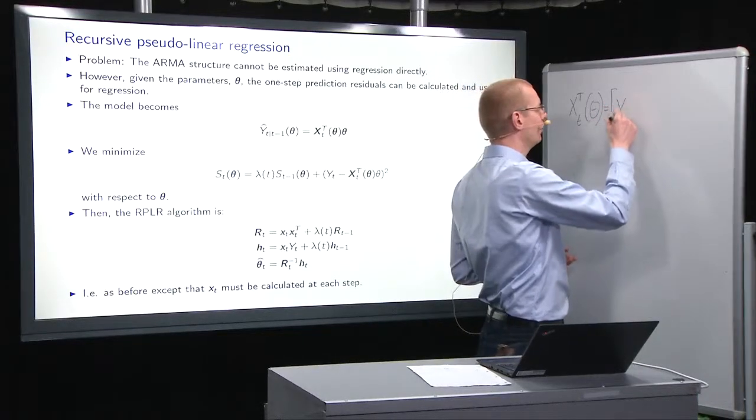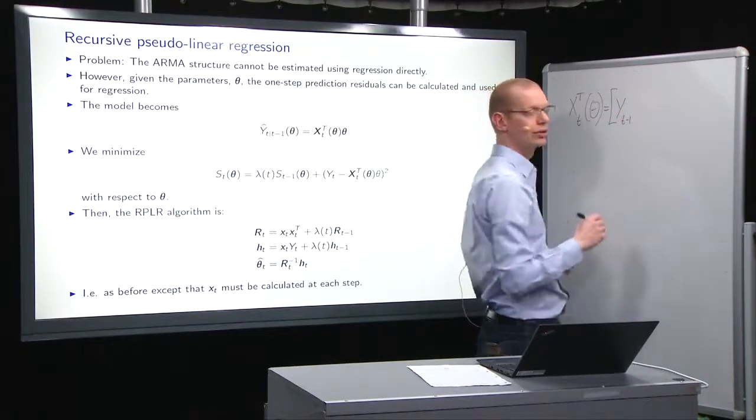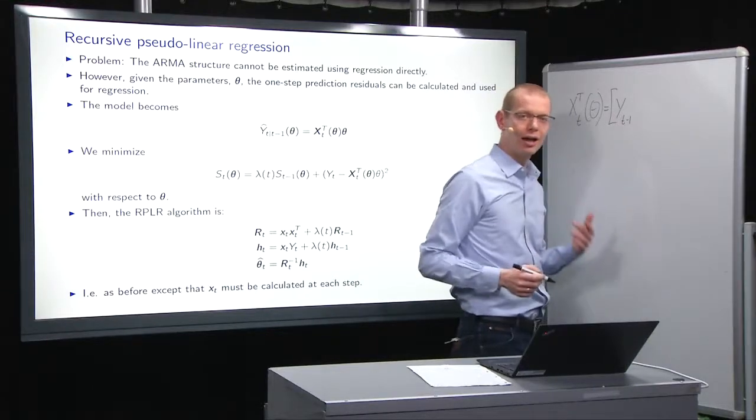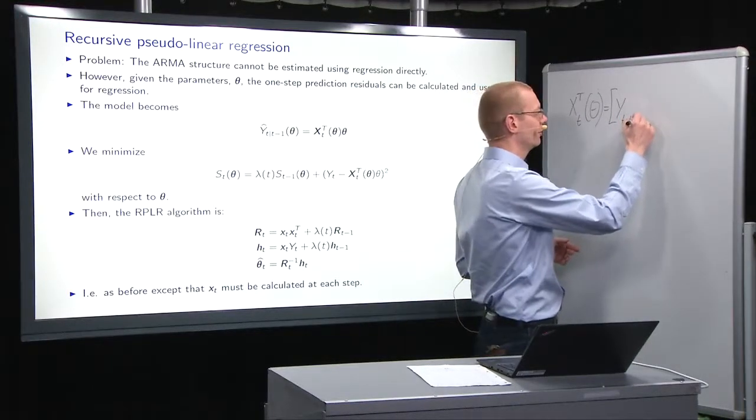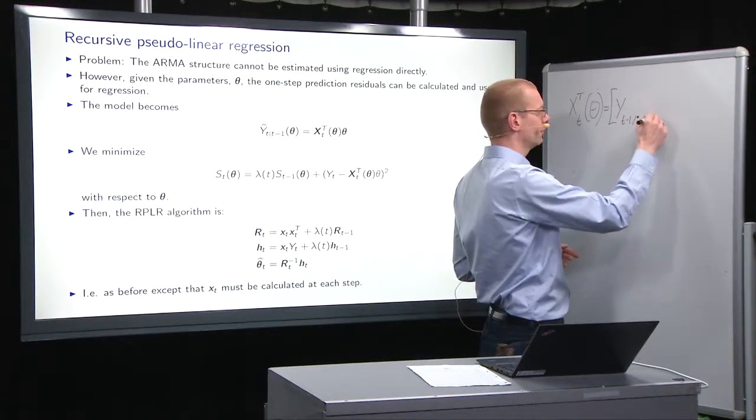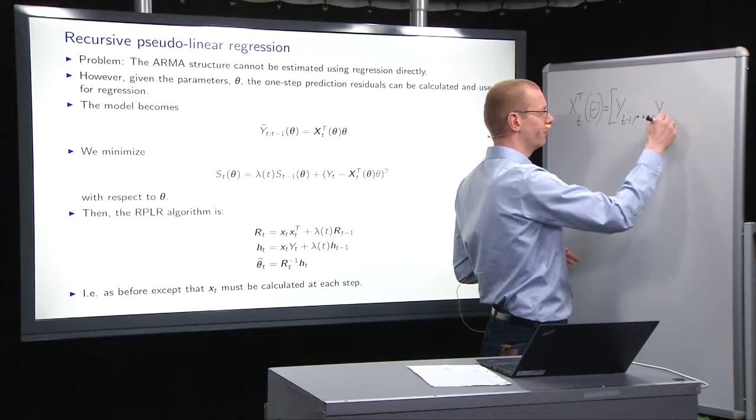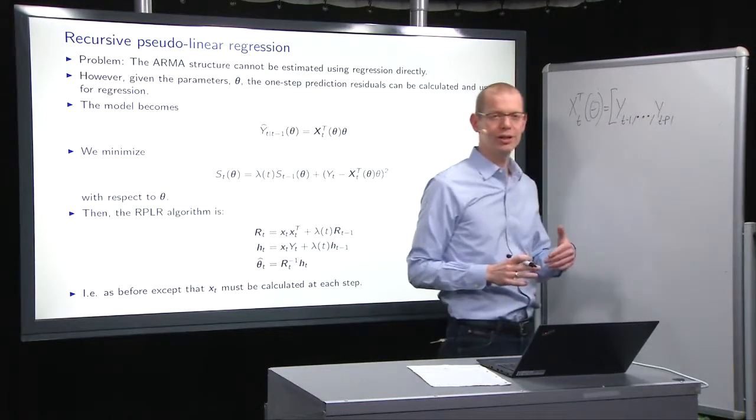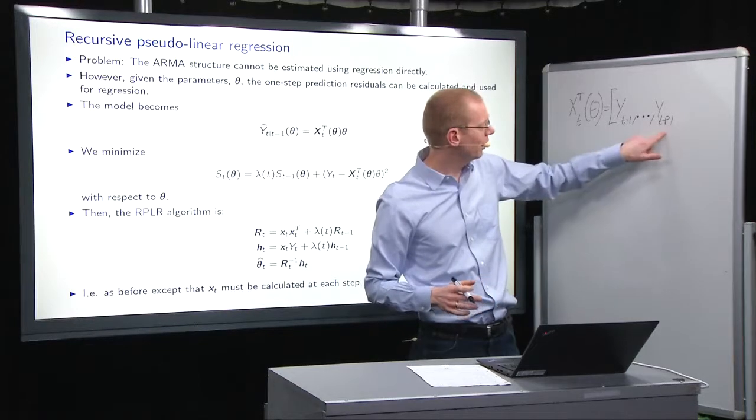but let's just assume there's an ARMA model. So, it contains the previous observations in here that we have always, just don't write them all, just dot, dot, dot, and then down to y t minus p. So, those are all the usual things for the ARMA model.